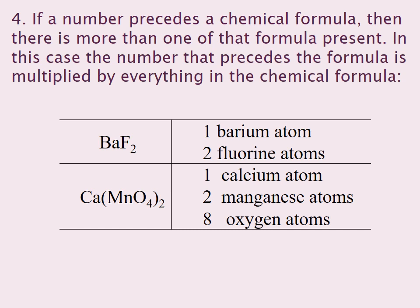Point 4: If a number precedes a chemical formula, then there is more than 1 of that formula present. In this case, the number that precedes the formula is multiplied by everything in the chemical formula. If I have barium fluoride, I have 1 barium atom and 2 fluorine atoms.